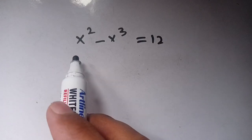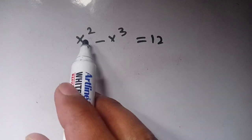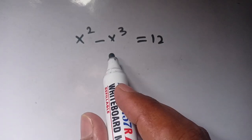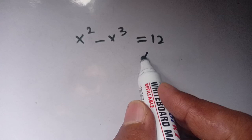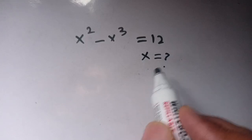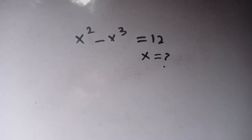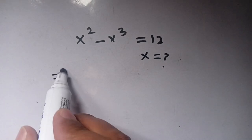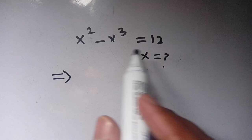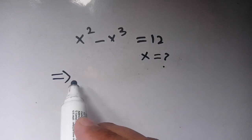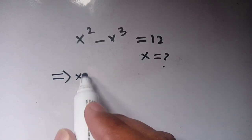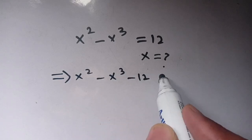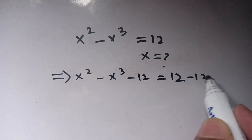Hello everyone. In today's video we are going to solve the equation x squared minus x cubed is equal to 12, and we have to find its roots — meaning we have to find the value of x which satisfies this equation. First of all, we can subtract 12 from both sides, left hand side as well as right hand side, so we get x squared minus x cubed minus 12 is equal to 12 minus 12.